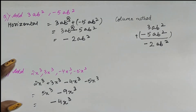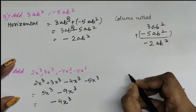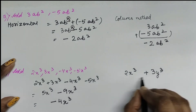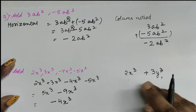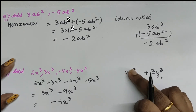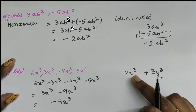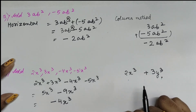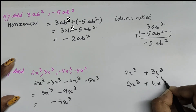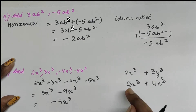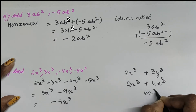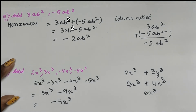Remember, whenever you have like terms only then you can do the addition. Suppose the question was 2x³ plus 3y³ — we could not add them because they are different terms, x³ and y³. We can put a plus symbol but we cannot actually add them. But if we have 2x³ plus 4x³, since they are like terms, we add the numerical coefficients: 2 plus 4 is 6, giving us 6x³.